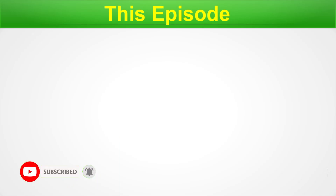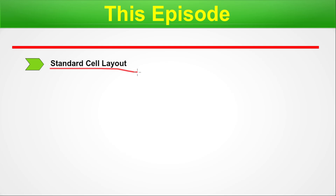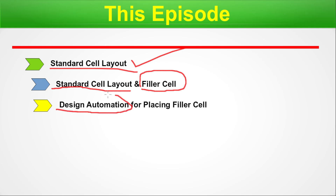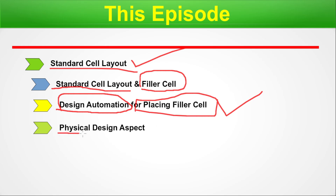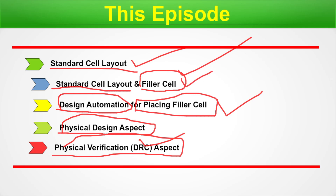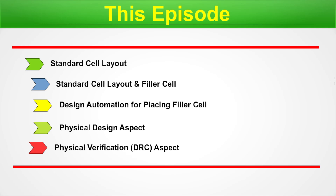Hey guys, welcome back. In today's episode we are going to discuss the below points. First, we will familiarize you with the standard cell arrangement layout — this is how the standard cells are placed during an ASIC design. Next, we will see how the filler cell comes into the picture. We'll also cover design automation for placing filler cells, the physical design aspect, and the DRC aspect of the filler cell. So that's the menu for today — without any further delay, let's begin.